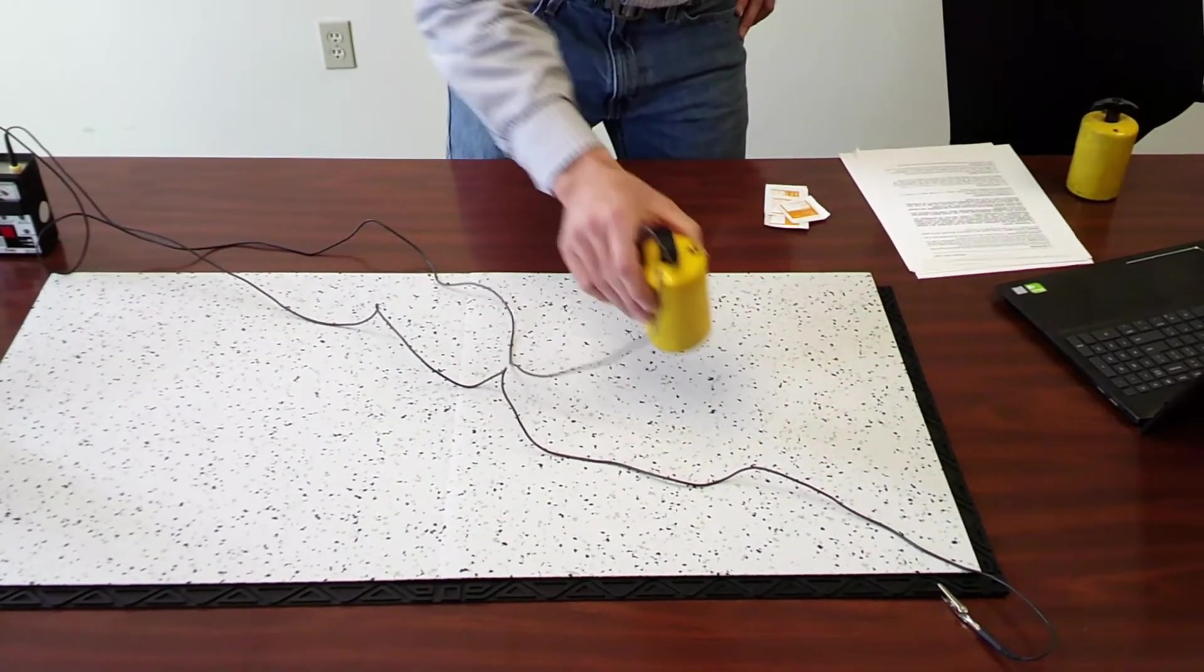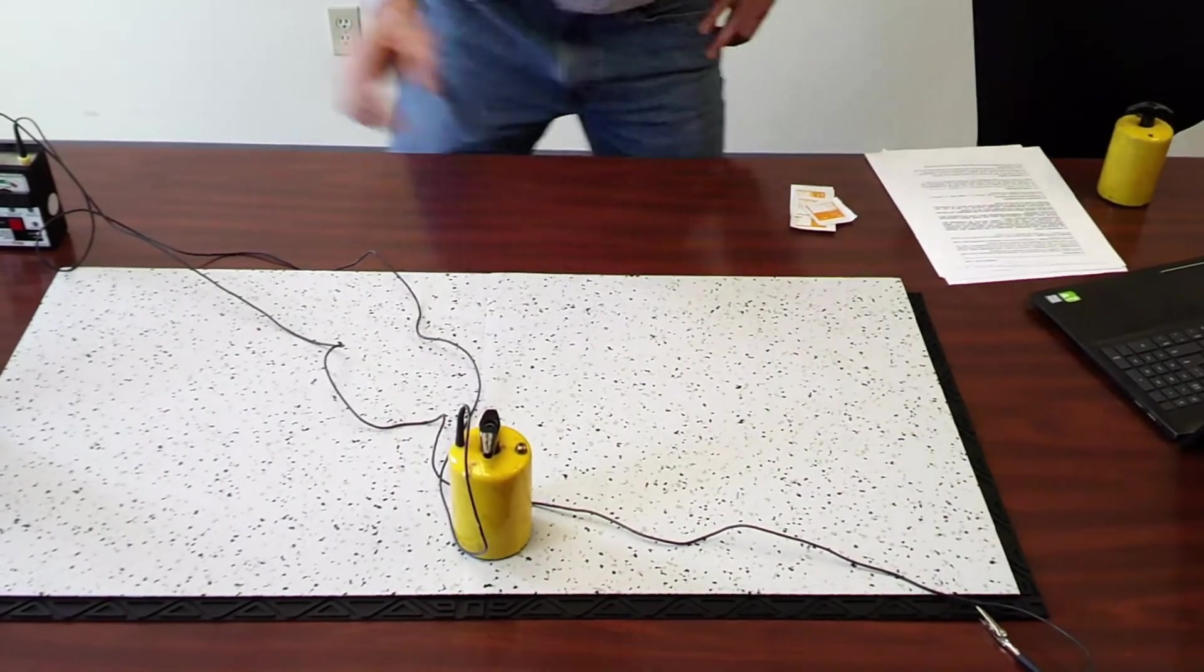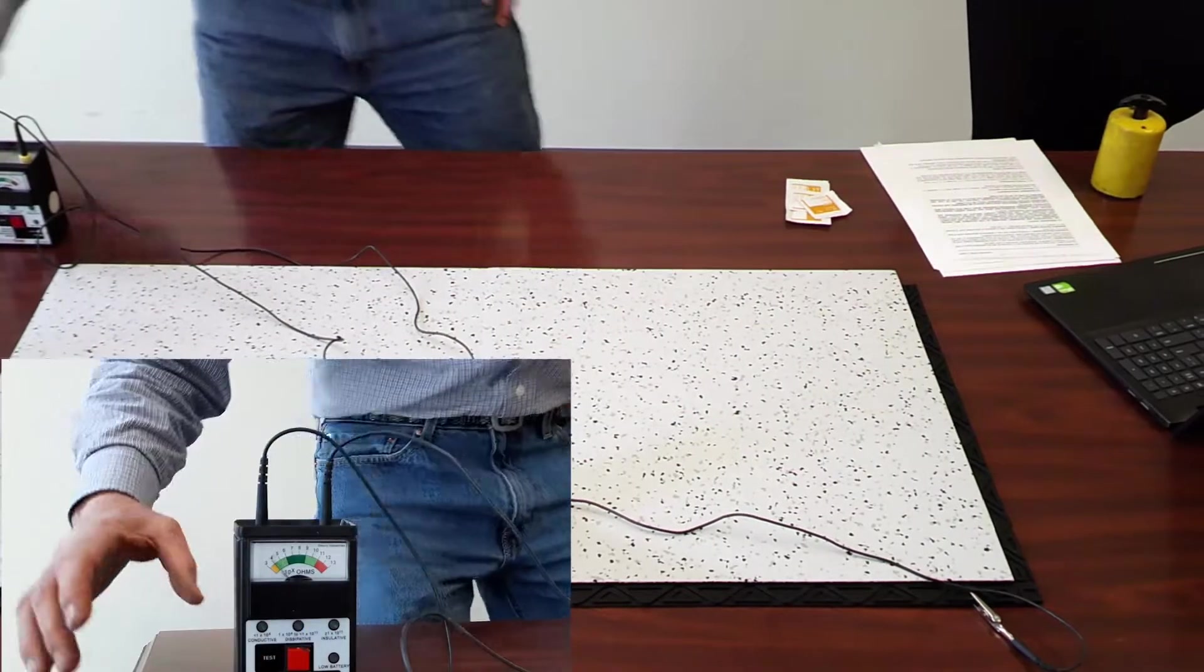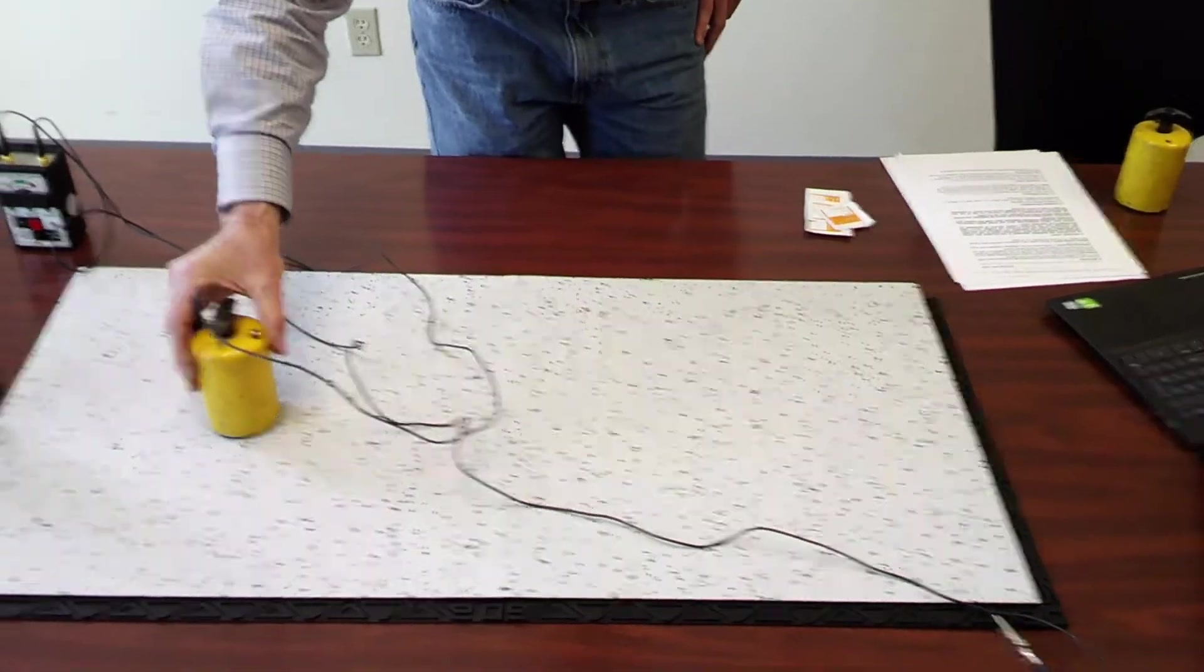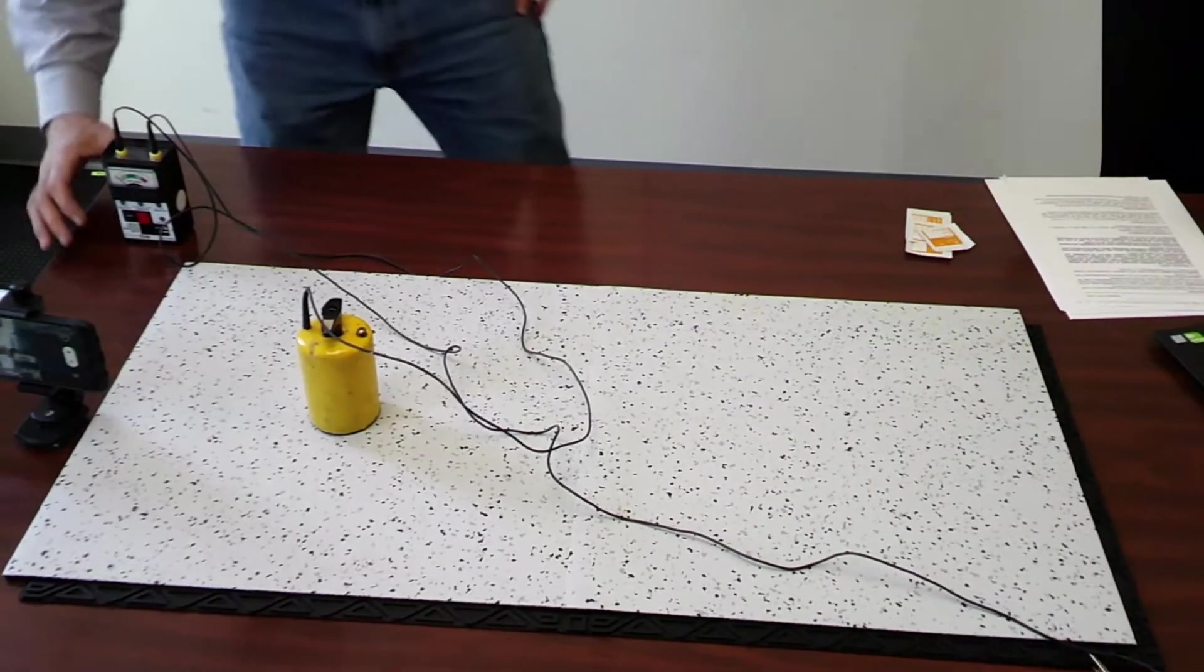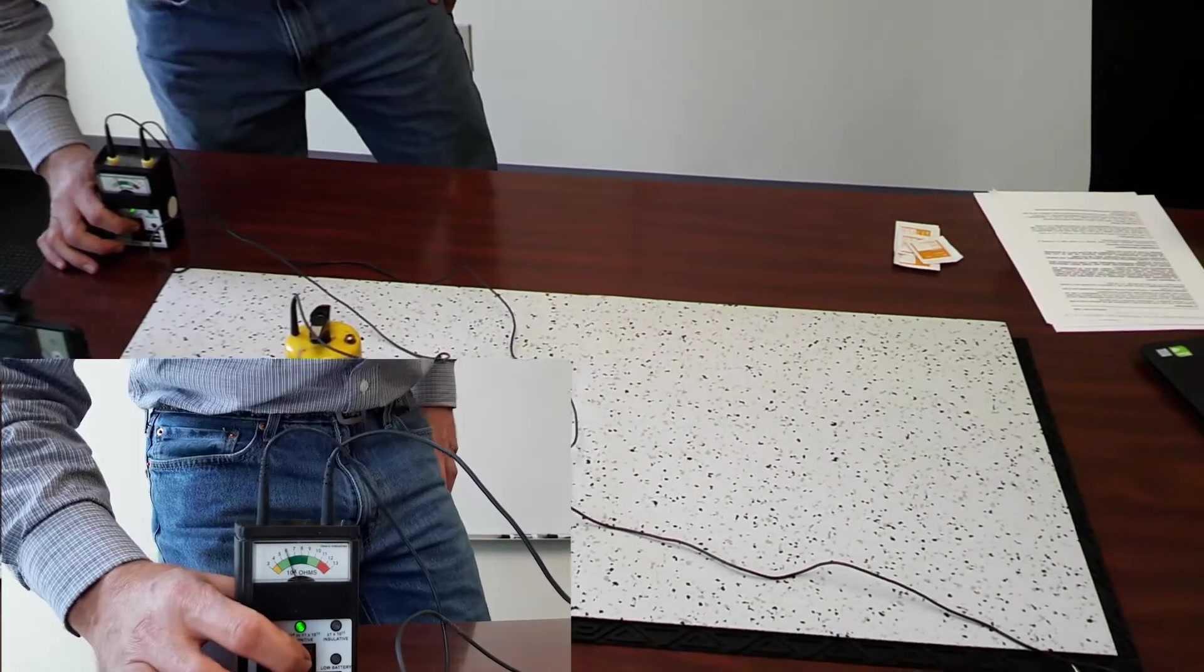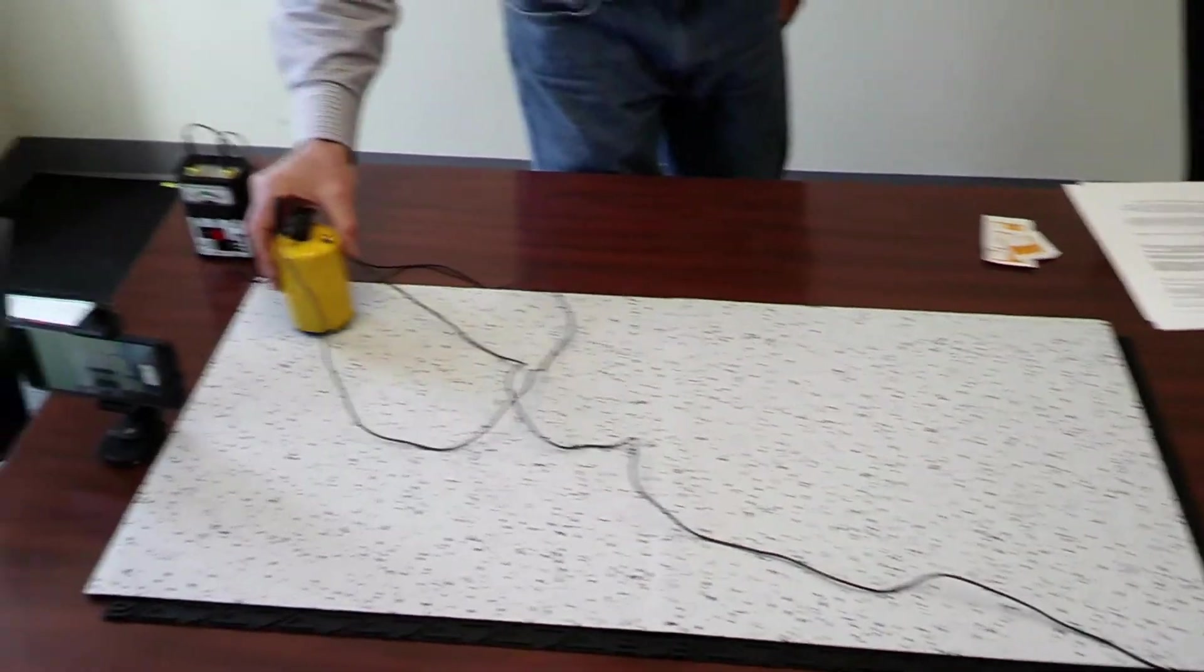The third point is kind of towards the center of the top. Again, we're getting a similar result. The fourth point is kind of in the middle on the right. The locations are detailed in the standard. There's a little map that tells you how to do this.